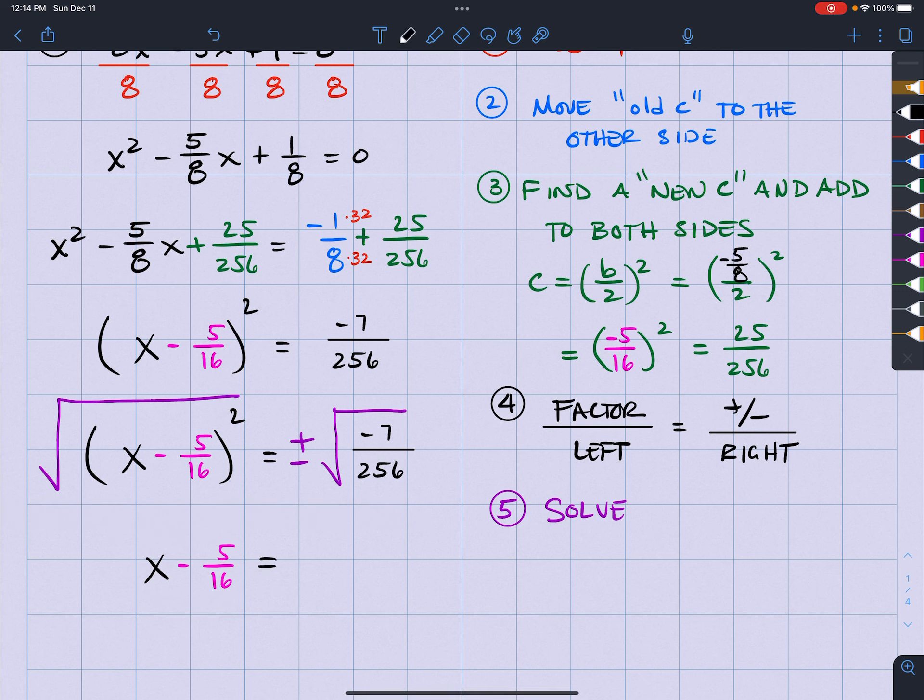But my right side is going to be the plus and minus square root of negative 7, which is going to be square root of negative 1 and square root of 7. So that's going to be i square root of 7 over square root of 256 is 16. So my answer here is going to be X is going to equal to, since I have to add this 5 sixteenths over to the other side, I'm going to have a 5